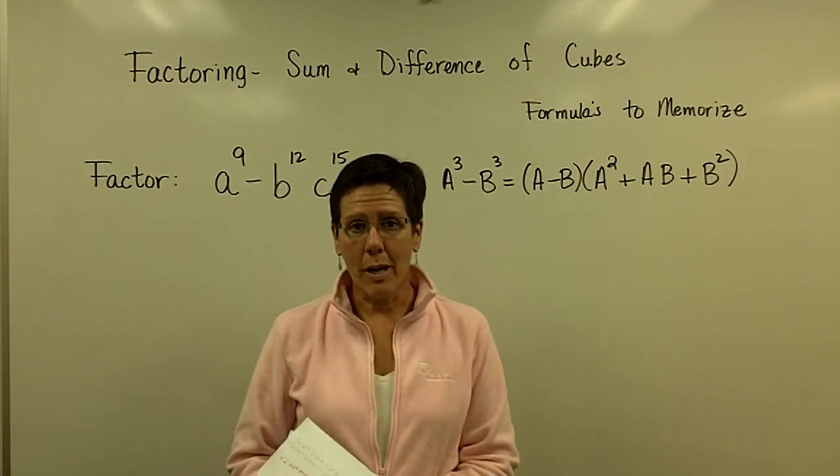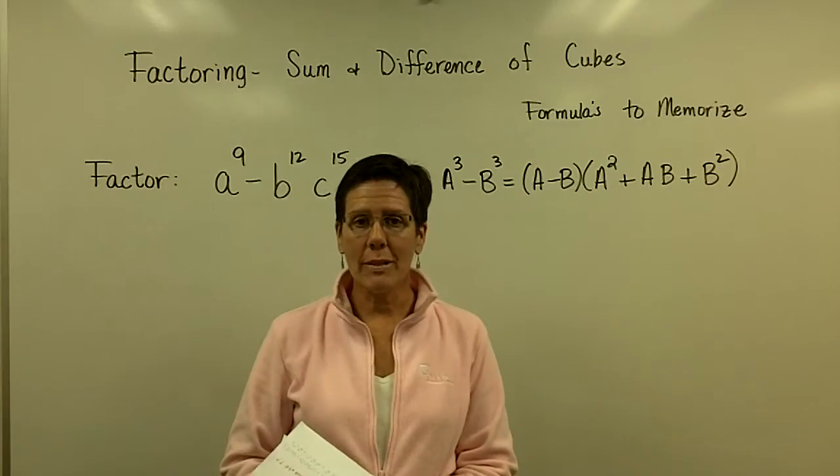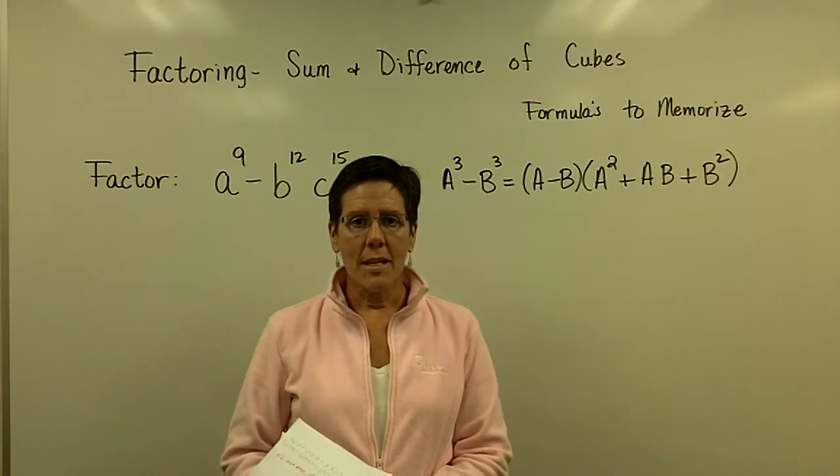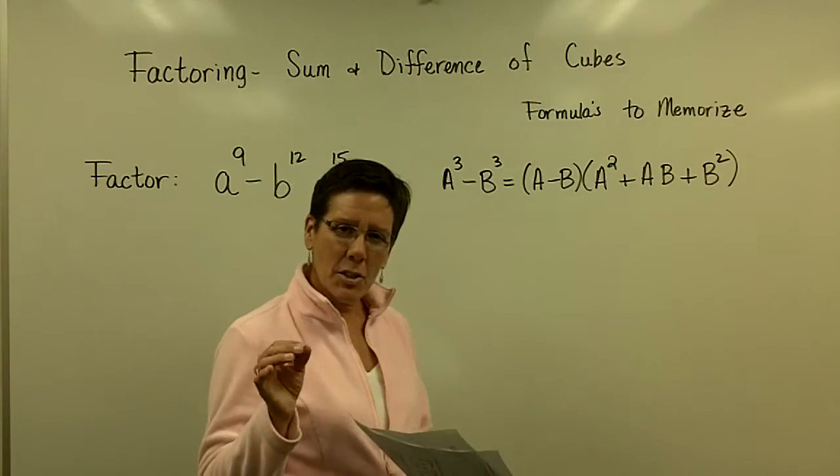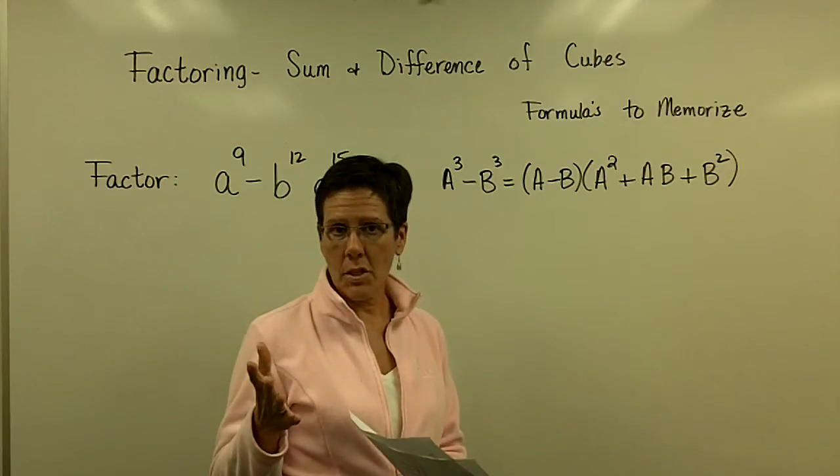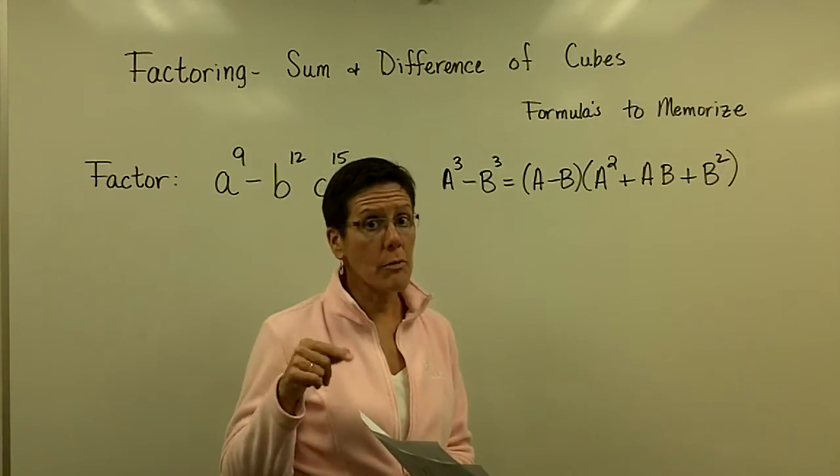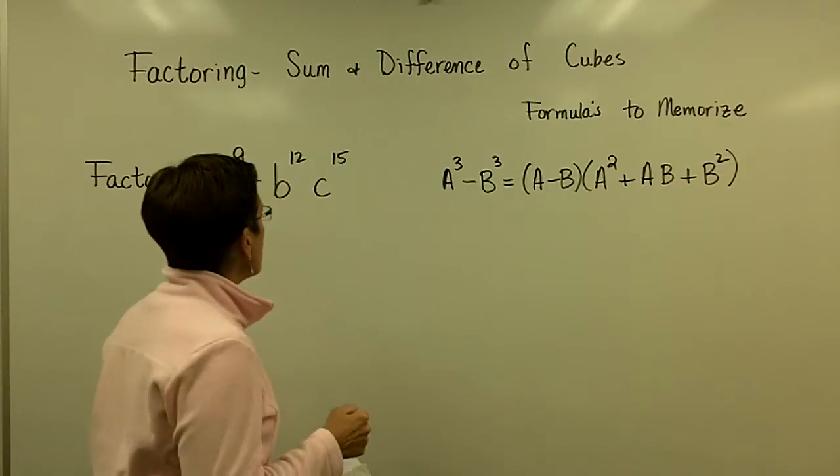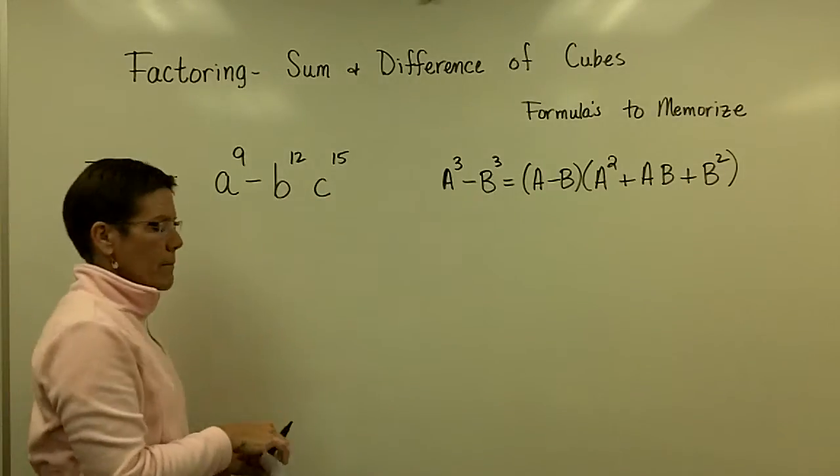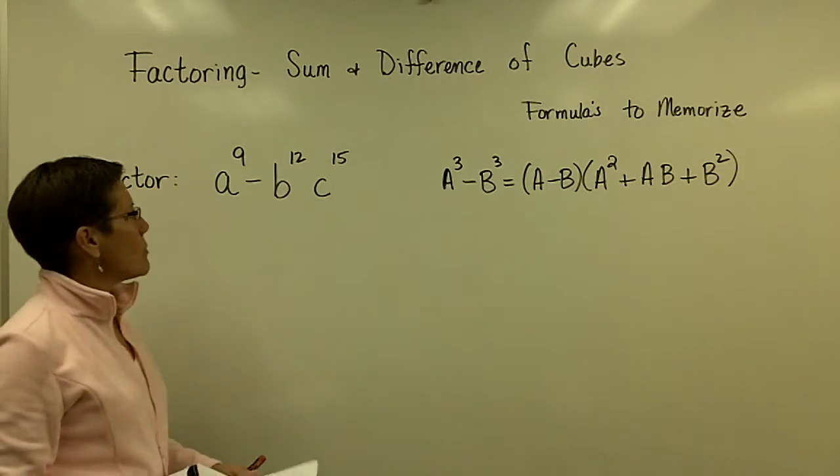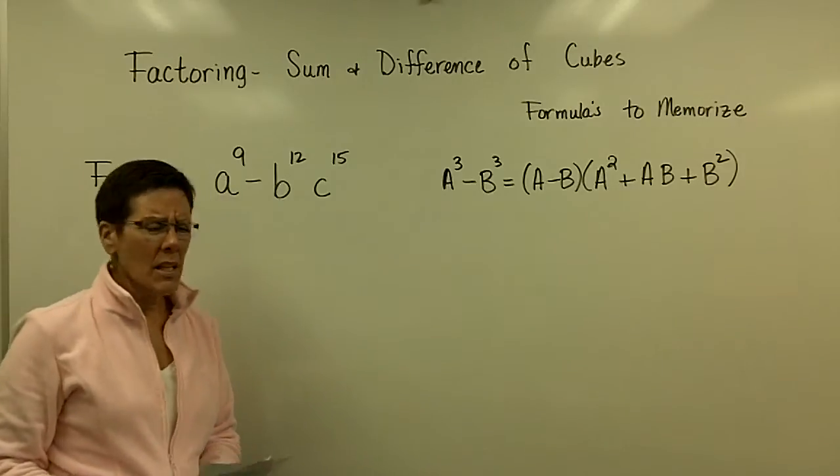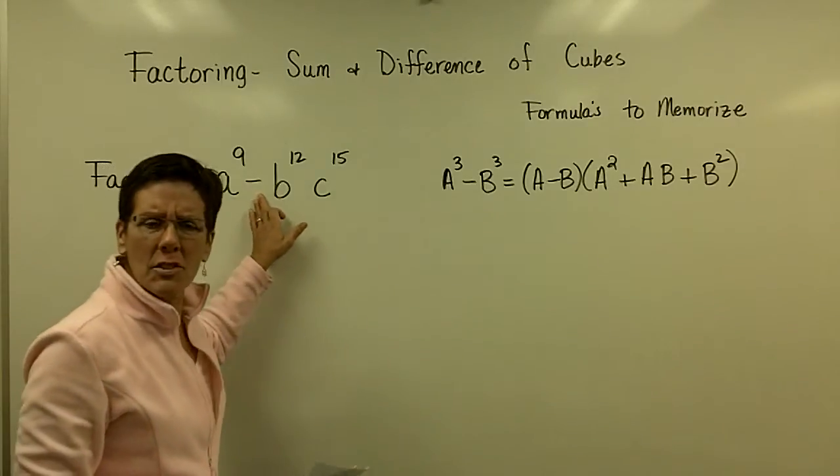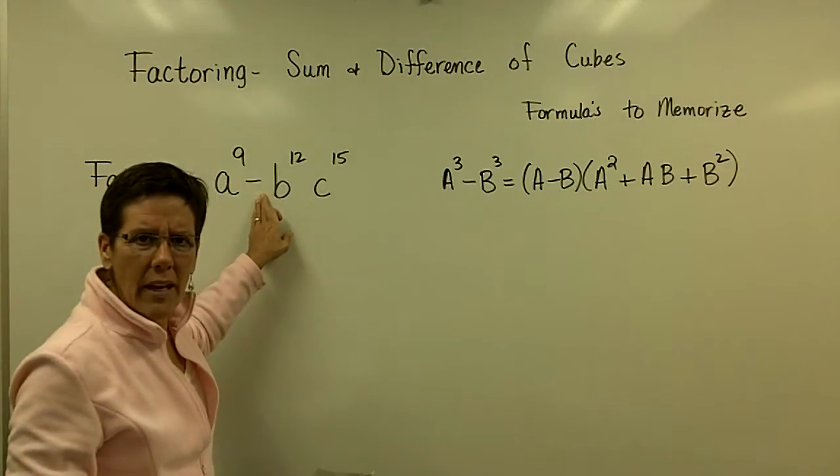Let's factor a couple challenging problems that are both going to be difference of cubes. They have unusual exponents, and the second one's going to have the greatest common factor to get out before we can start doing the work. So take a look at this problem. A to the 9th, B to the 12th, C to the 15th. How do I know it's not the difference of squares?